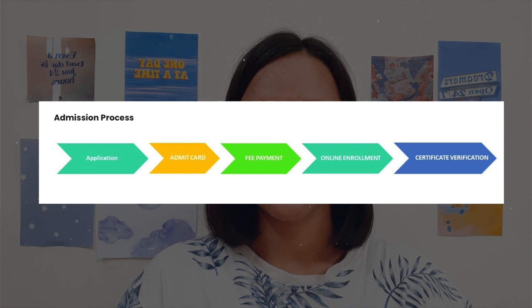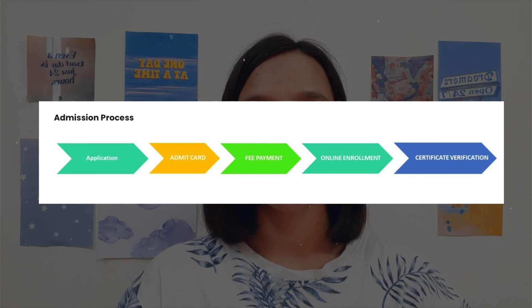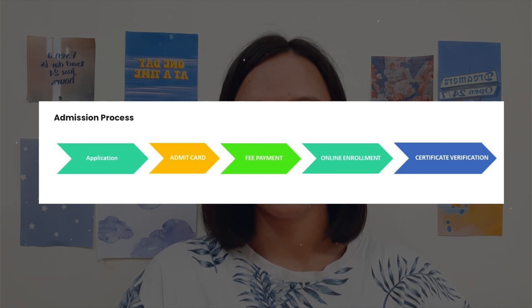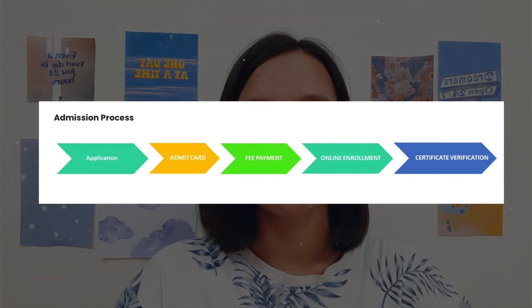You can think of this email as your admit card. In it, you will see your ID and the course for which you have been selected. You can also verify your status on the selection list on the website.